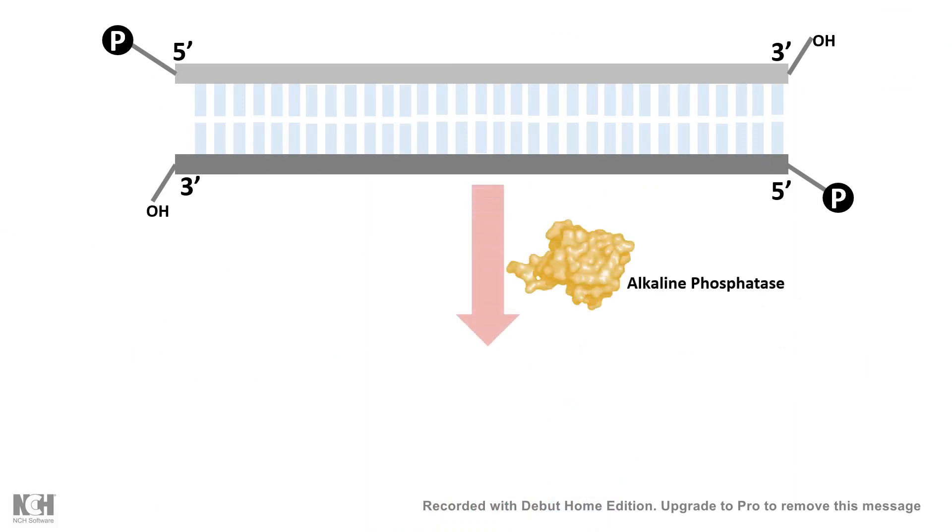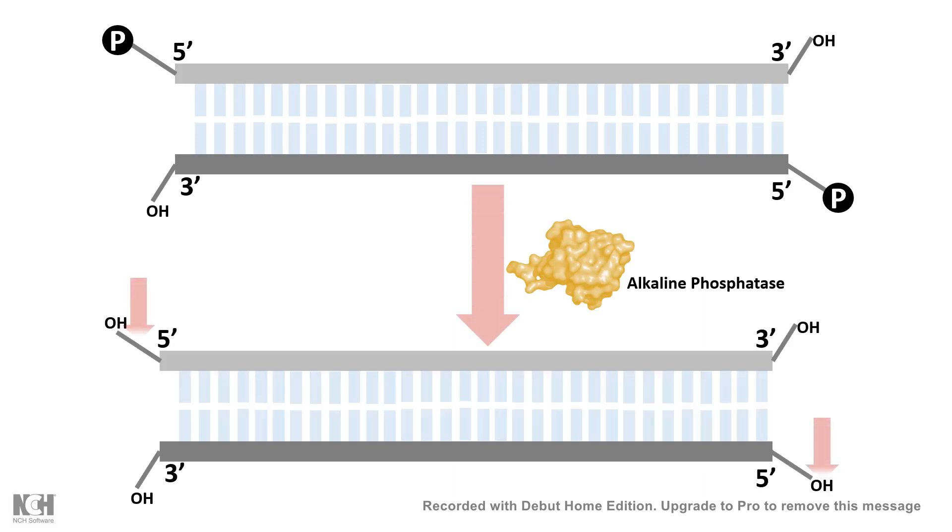First, we use alkaline phosphatase. Alkaline phosphatase cleaves off the terminal 5' phosphate group and makes a hydroxyl group instead.